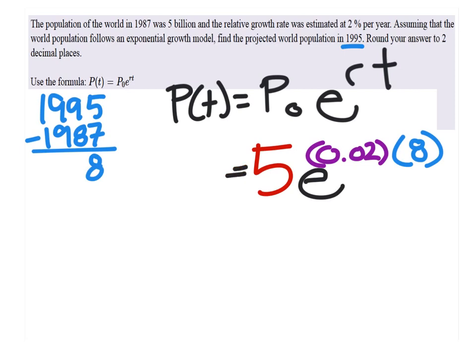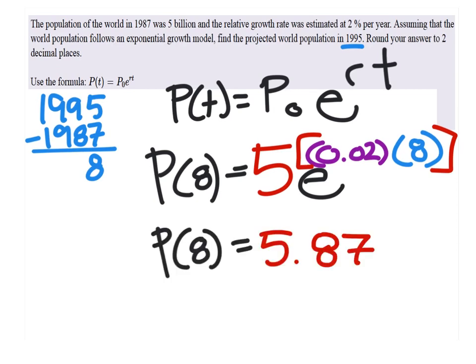And so this really comes out to be P of 8 equals this. We can type that directly into the calculator. Just remember, some of you may have to put parentheses around both of these, or you could multiply them first. So this is the answer I got. I rounded because it said to round to two decimal places. And this would be in billions. So 5.87 billion.